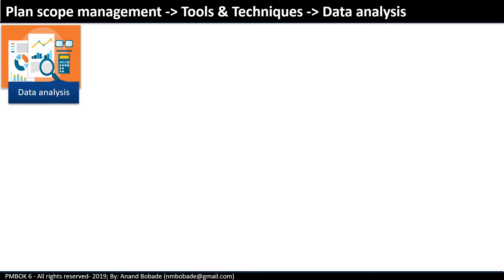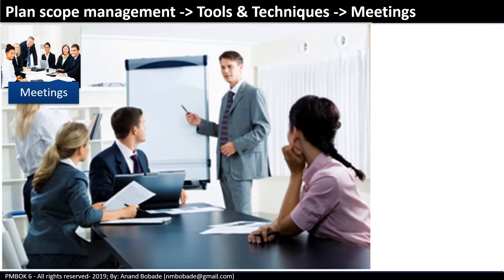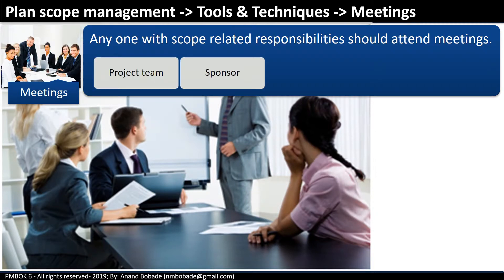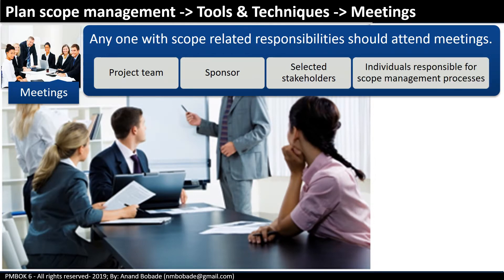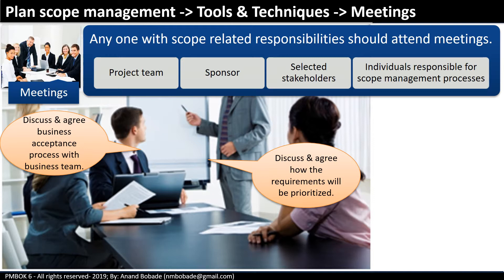Data analysis: the technique used in this process is alternative analysis. There may be more than one way to achieve a certain requirement, and after brainstorming, a decision must be made about which alternative to pursue. Alternative analysis helps the project manager reach agreement between various stakeholders. Meetings: scoping exercises involve many stakeholders and require meetings. Attendees, besides the project team, include the sponsor, selected stakeholders, and those responsible for scope management. Meetings may be held to discuss and agree on how requirements will be prioritized or to agree on the business acceptance process.